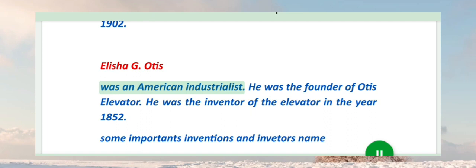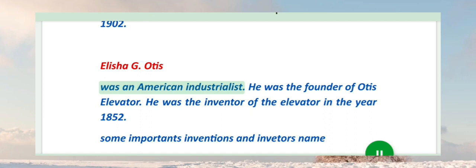Elisha G. Otis was an American industrialist. He was the founder of Otis Elevator. He was the inventor of the elevator in the year 1852.